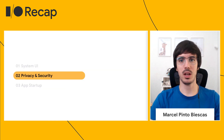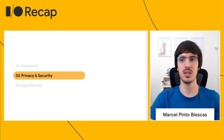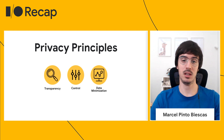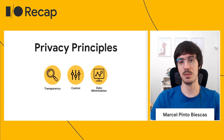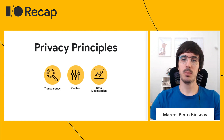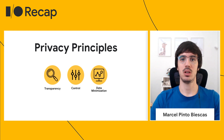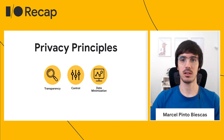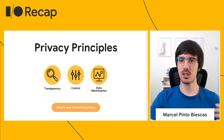Let's go to a major focus area on Android: privacy and security. Every year we bring changes to ensure the ecosystem respects user privacy with high security standards. We follow three main principles: making apps and the OS transparent to users about which apps are using what and when; providing more control to users over what apps and the system can use; and ensuring applications minimize the data they collect.